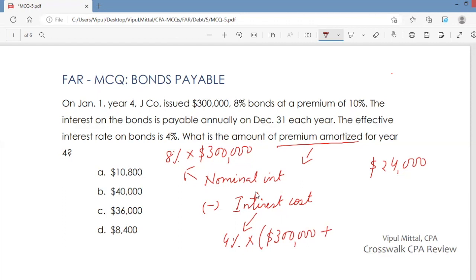Unamortized premium is 10%. Unamortized premium is $30,000. That is 10% of $300,000. And this periodic interest cost is $13,200.